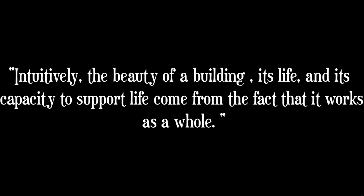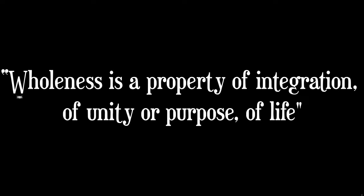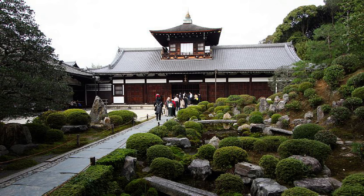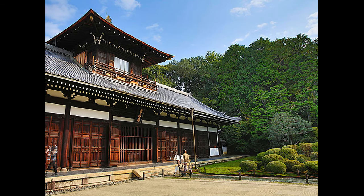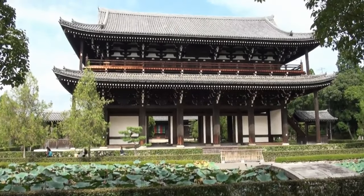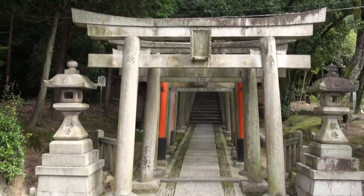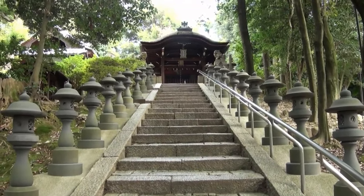He states: "Intuitively the beauty of a building, its life, and its capacity to support life, comes from the fact that it works as a whole." Wholeness is a property of integration, of unity of purpose, of life. For example, he heralds the design of Tofukaji Temple, which is somehow both cultivated and overgrown, reconciling nature and humanity, and has a clearly designed path integrated harmoniously with its environment. He shows how the space is designed so impeccably that insects and animals coordinate with the rhythms of the person walking through, mobilizing nature into a synchronized dance.